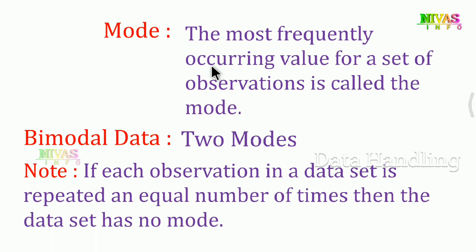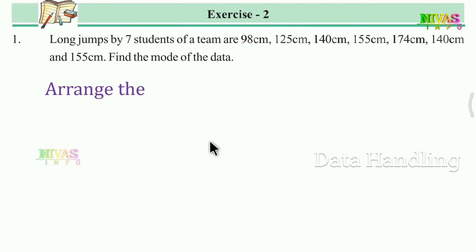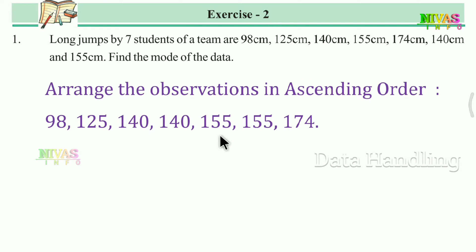First problem: Long jumps by seven students of a team are 98, 125, 140, 155, 174, 140, and 155 cm. Find the mode of this data. To find the mode, first arrange the data in ascending order.